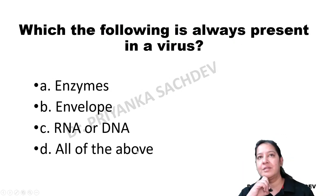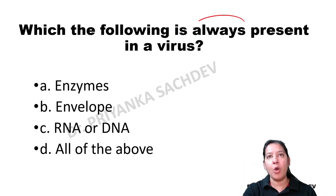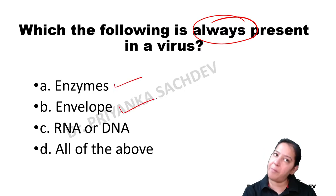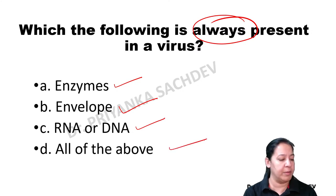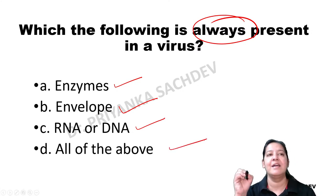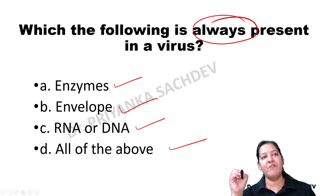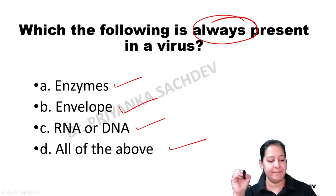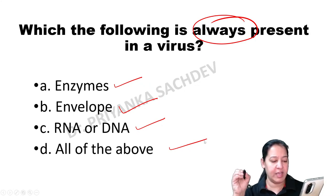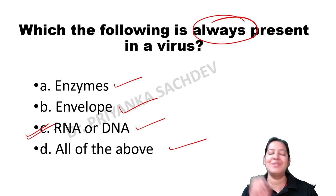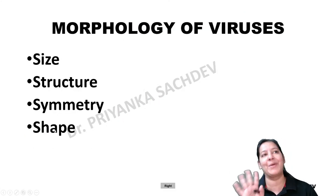The next question: 'Which of the following is always present in a virus?' Options are: enzymes, envelope, DNA or RNA, or all of the above. The correct answer is C - DNA or RNA is always present in a virus.